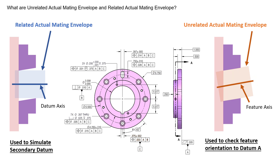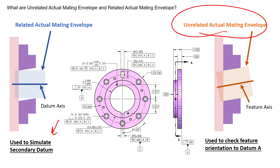The RAME is used to simulate lower precedent datums — it's oriented to higher precedent datums and related to other datums. The unrelated actual mating envelope is utilized to give us the central elements of our feature, in this case the axis of our ID. Hopefully this answers your question and adds some clarity to the differences between the related and the unrelated actual mating envelopes, and when to use either. Thanks again for submitting your question.